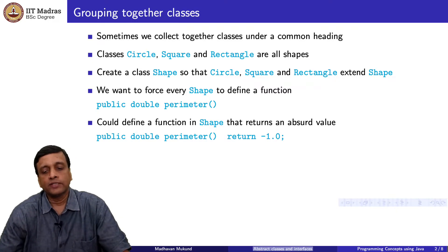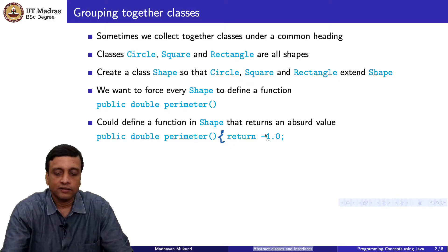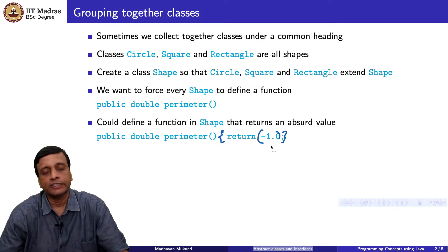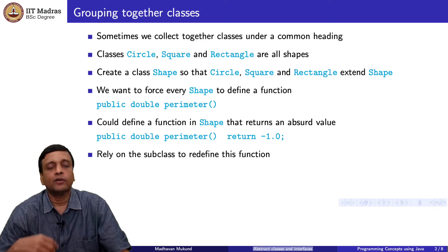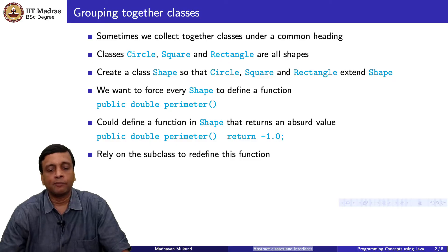One way to do this is to create an abstract definition inside Shape, which is kind of vacuous. You could have a function inside Shape which is called perimeter and it returns a negative number. Clearly, the perimeter of a shape cannot be negative, so you know that this is wrong. What it means is that if you see a minus 1, you know that the subclass was written improperly. So you are actually relying on the programmer of the subclass to redefine this function.